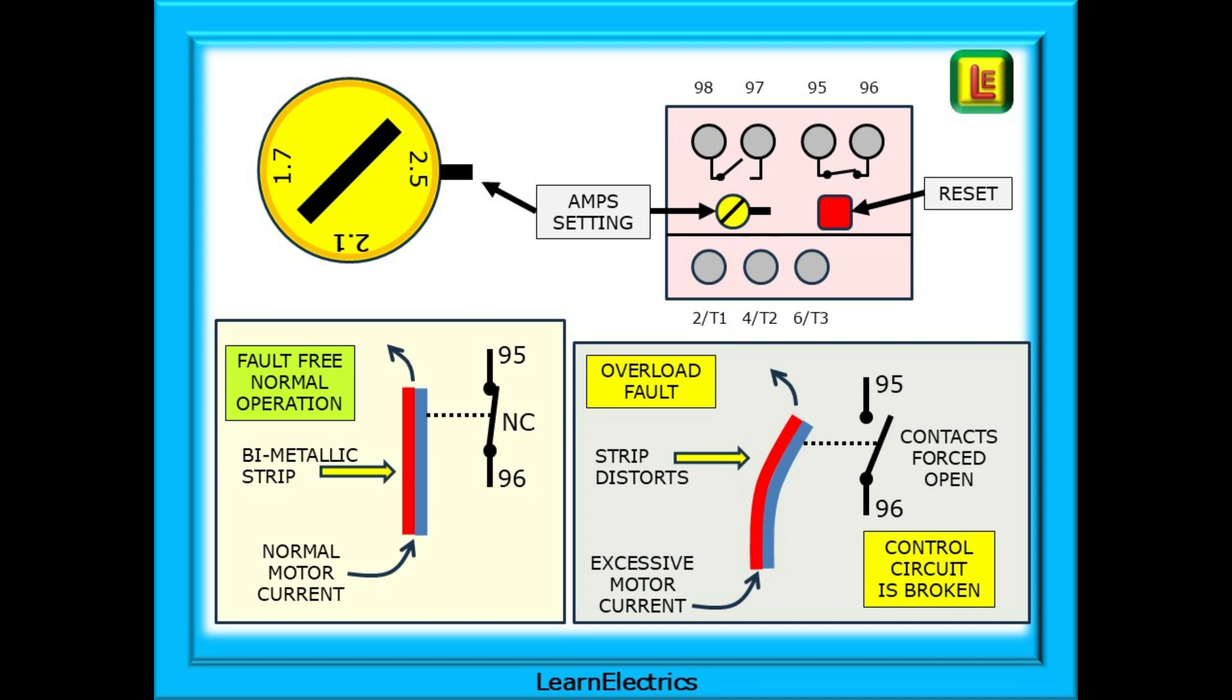If the overload does trip at the required motor setting we do not turn the overload setting up. We find out why it has tripped, correct the problem and reset everything. In fault-free normal operation a bimetallic strip will allow current from one of the phases to pass through it. The strip will become warm as the current flows and that is to be expected. If the overload is set correctly then the heat generated in the bimetallic strip will be minimal.